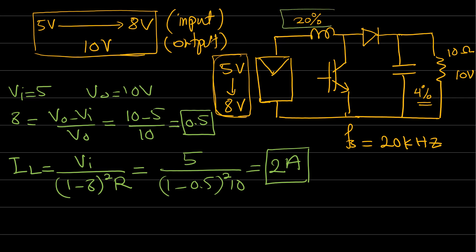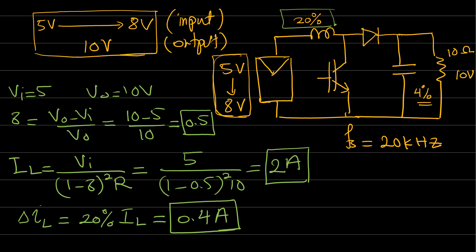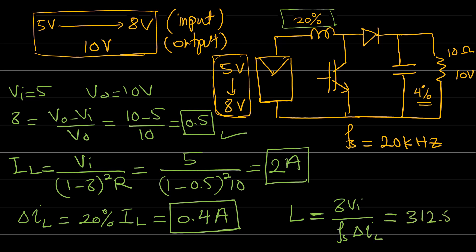We need to ensure the ripple for this 2 A does not exceed 20%, so ΔI_L = 20% × 2 = 0.4 A. This is the ripple used to find the inductor value. The inductor value when Δ = 0.5 is L = (Δ × V_input) / (f_s × ΔI_L) = 0.5 × 5 / (20,000 × 0.4) = 312.5 μH.